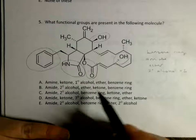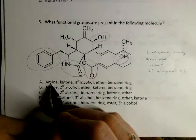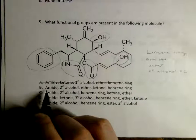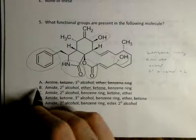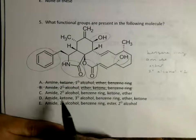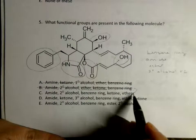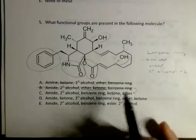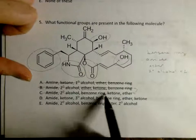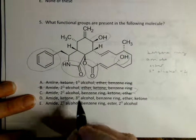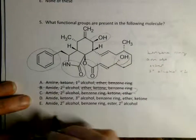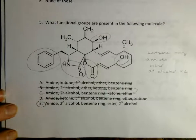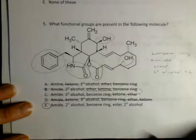Going through each answer choice to find what matches: answer choice A has an amine — we didn't find an amine, we found an amide, so that's wrong. Answer choice B has an amide and a secondary alcohol, which is promising, but it also lists an ether and a ketone instead of an ester — so that's wrong. C and D appear to be the same just in different order, which hints there won't be two right answers. There's no tertiary alcohol here — all these alcohols are bonded to two carbons, making them secondary alcohols. So the right answer is choice E: an amide, a secondary alcohol, a benzene ring, an ester, and another secondary alcohol.